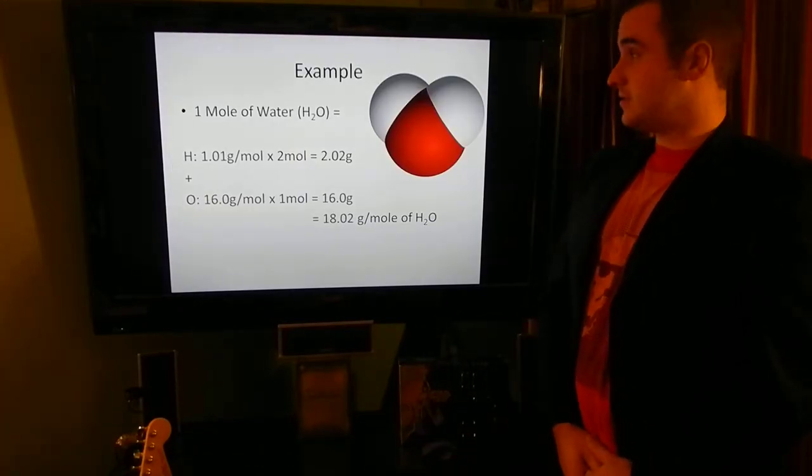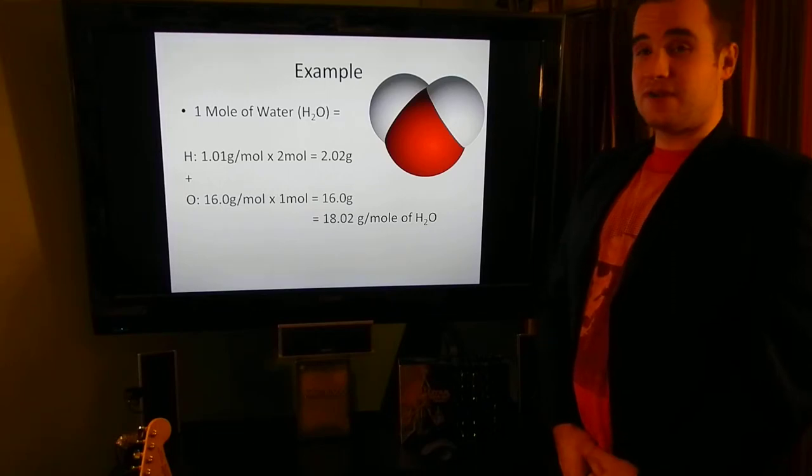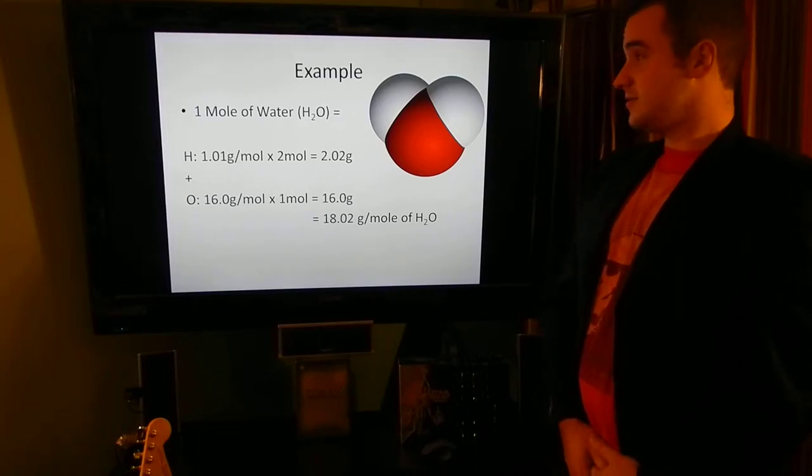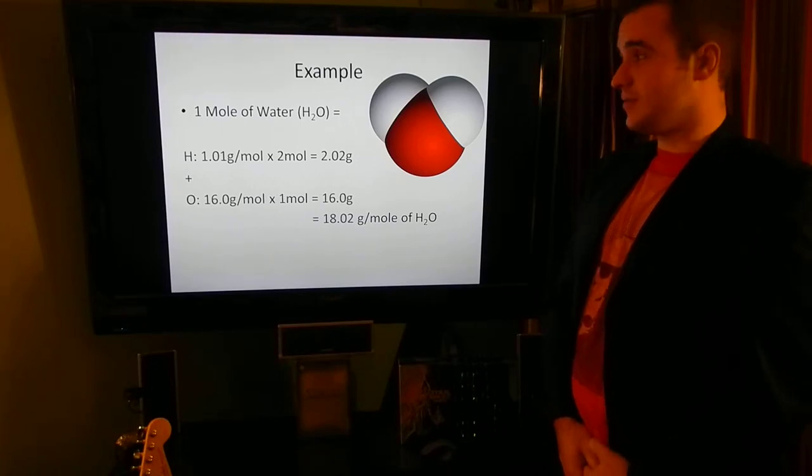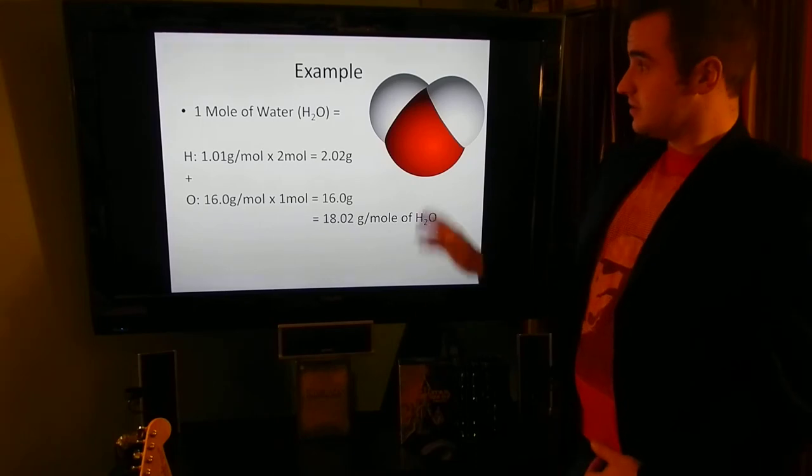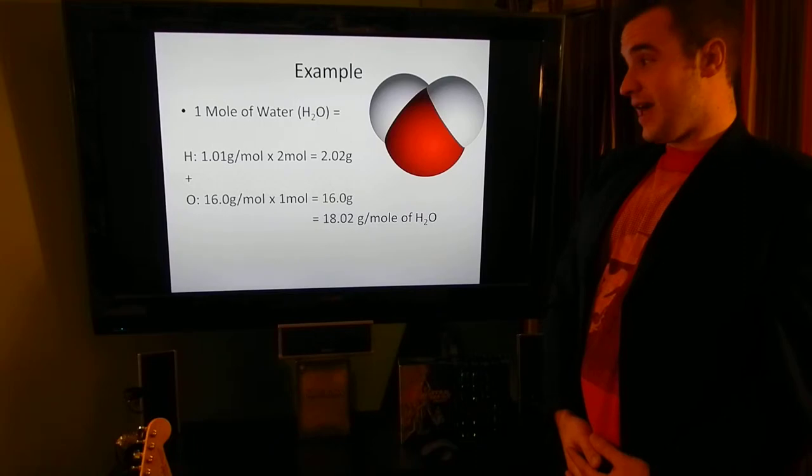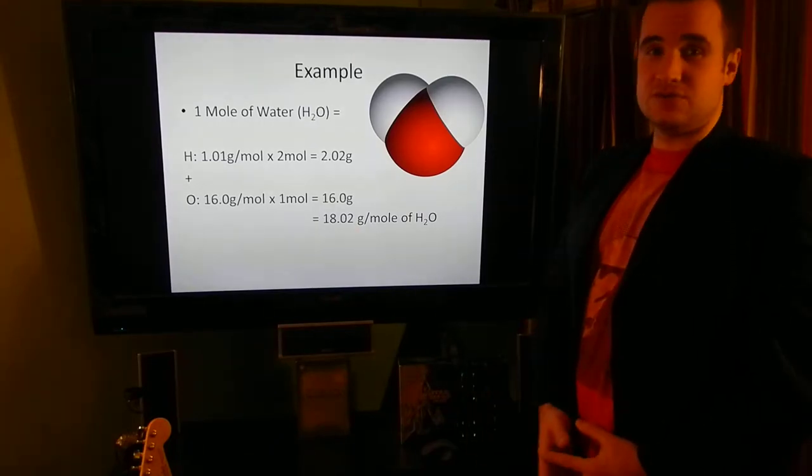That's pretty convenient because it lets us figure out things like the weight of water. If we had one mole of water exactly, we could figure out exactly how much it weighed just by looking at the weights of hydrogen and oxygen on the periodic table. We know there's two hydrogens and one oxygen together, looking like Mickey Mouse here, and they would add up to 18.02 grams.